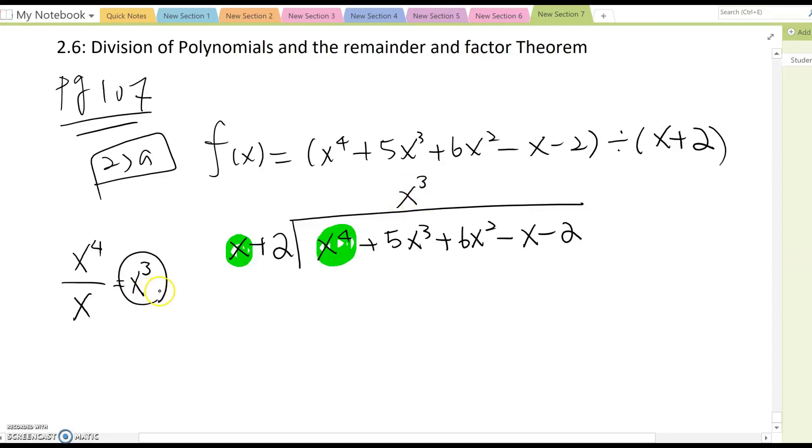After that, you multiply this x^3 with divisor. Then x times x^3 will be x^4, and 2 times x^3 becomes plus 2x^3. And now you subtract. Subtract means you switch the sign, so I am going to switch plus and minus and minus. Then x^4 and x^4 is eliminated, and 5x^3 minus 2x^3 becomes 3x^3. And this is coming down, so it becomes plus 6x^2.